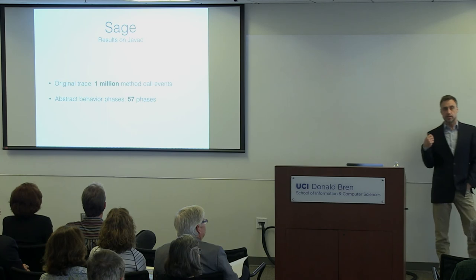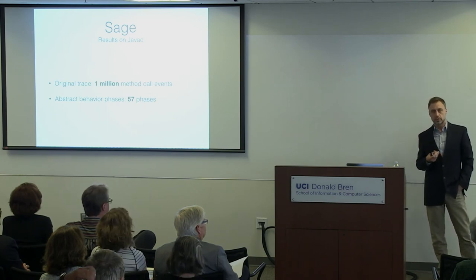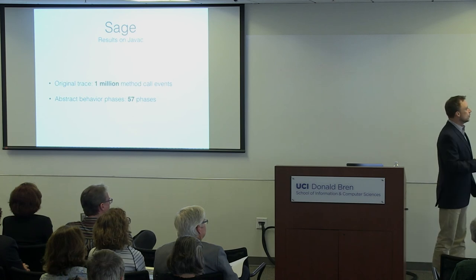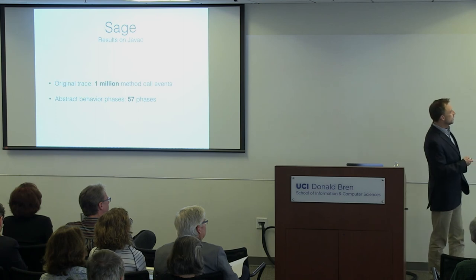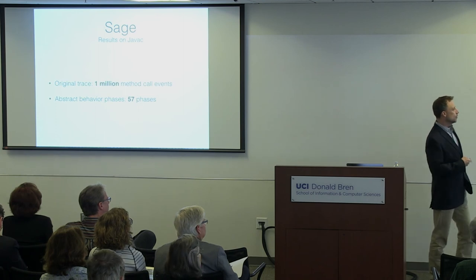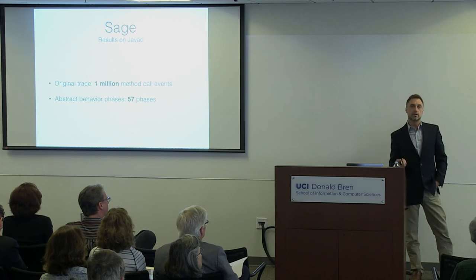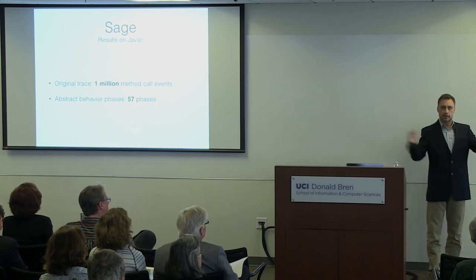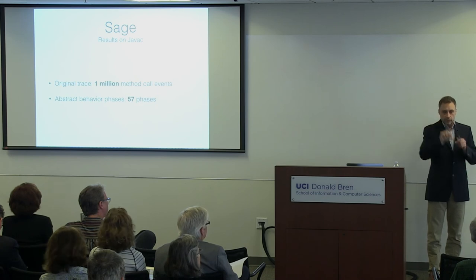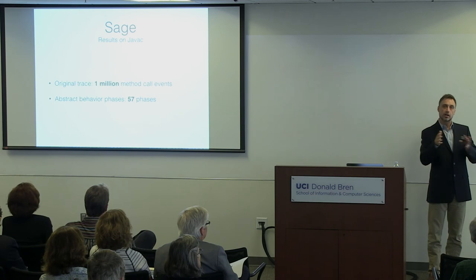For that particular sample execution, which is representative of the executions we looked at for javac, we had over one million execution events — these are method calls. In the original trace, we were able to abstract this up to 57 phases at the deepest level. At the high level there were just two phases, and as you look deeper and deeper you start to see the behaviors within. We're actually getting into the realm of something comprehensible by people, so developers can actually understand executions.